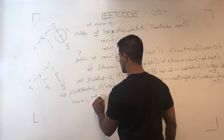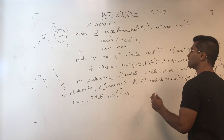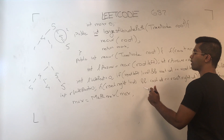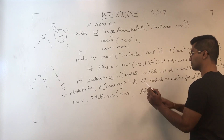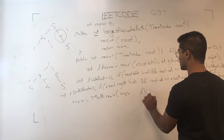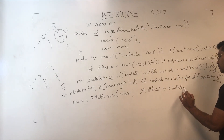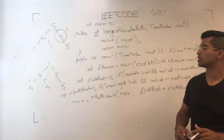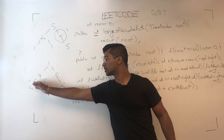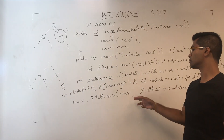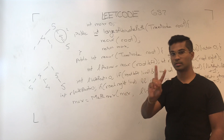Now that we have this, we need to update our global max value. This is going to be the combination of l_with_root and r_with_root. For example, node 4 is going to take the answer from his left child and his right child, and then choose between 0 and the sum of these two, which is 2. So the maximum is going to be 2.